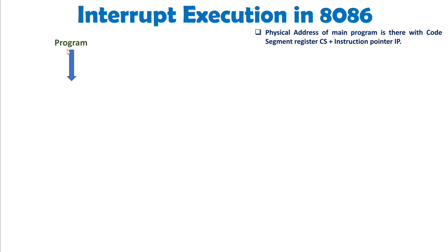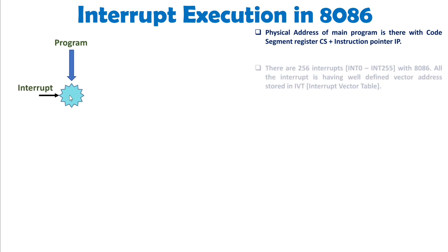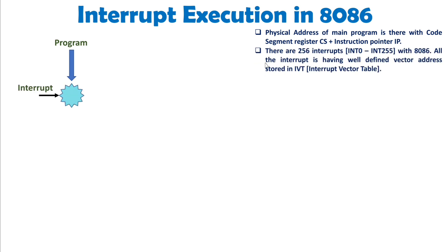When you execute the program instruction by instruction and an interrupt comes, note that 8086 has 256 interrupts — INT0 to INT255 — each with a well-defined vector address. All these vector addresses are stored in the interrupt vector table. I will make a separate video for the interrupt vector table, but for now just consider that every interrupt has a well-defined memory location stored there.